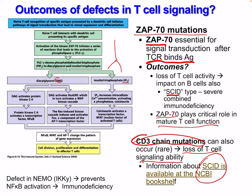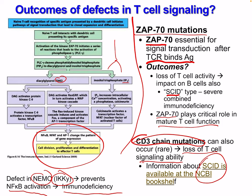Our pathway branches to IP3 and DAG resulting in activation. We can also have a defect in NEMO or IKK-gamma — this prevents NF-κB activation and results in immunodeficiency as well.